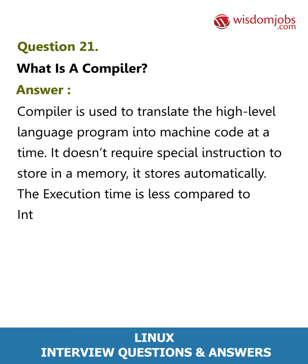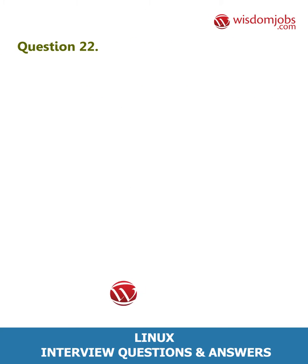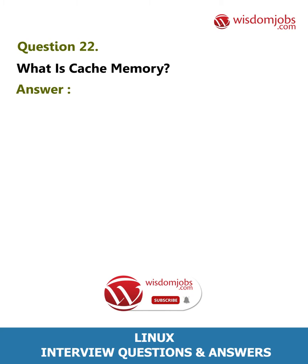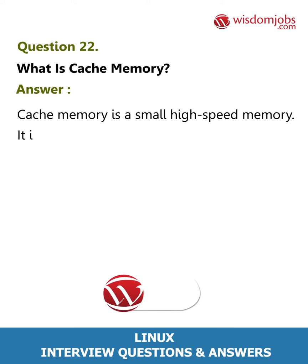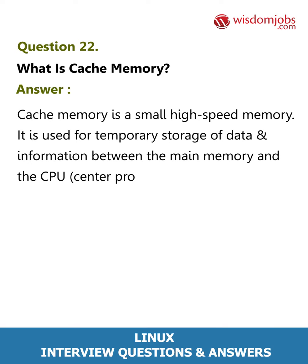Question 22: What is cache memory? Answer: Cache memory is a small, high-speed memory. It is used for temporary storage of data and information between the main memory and the CPU (Central Processing Unit). The cache memory is located only in RAM.